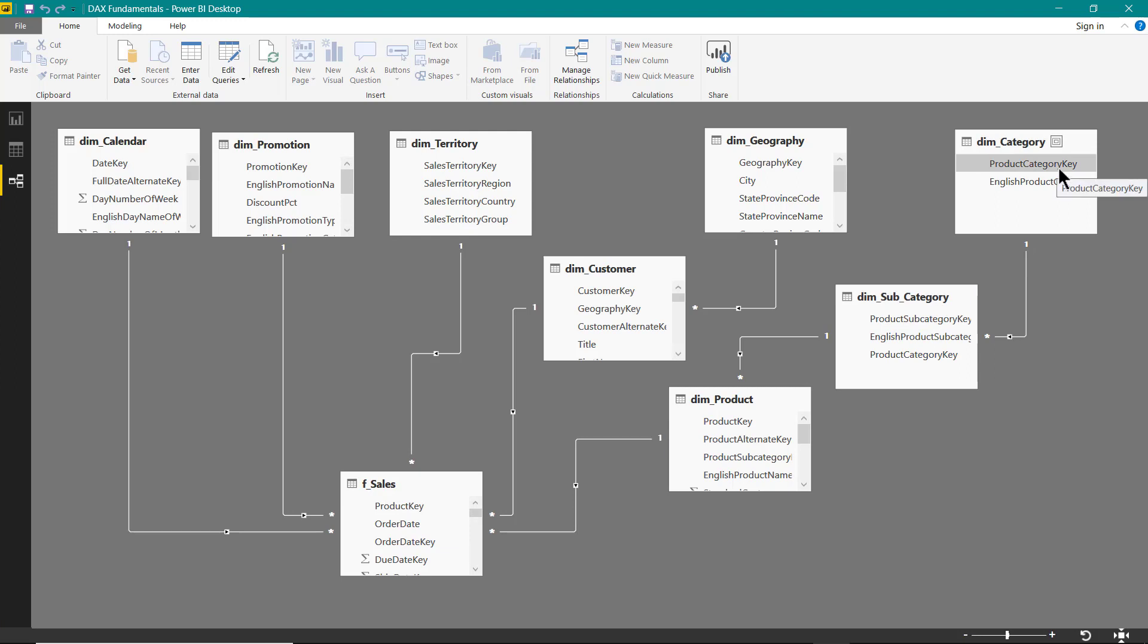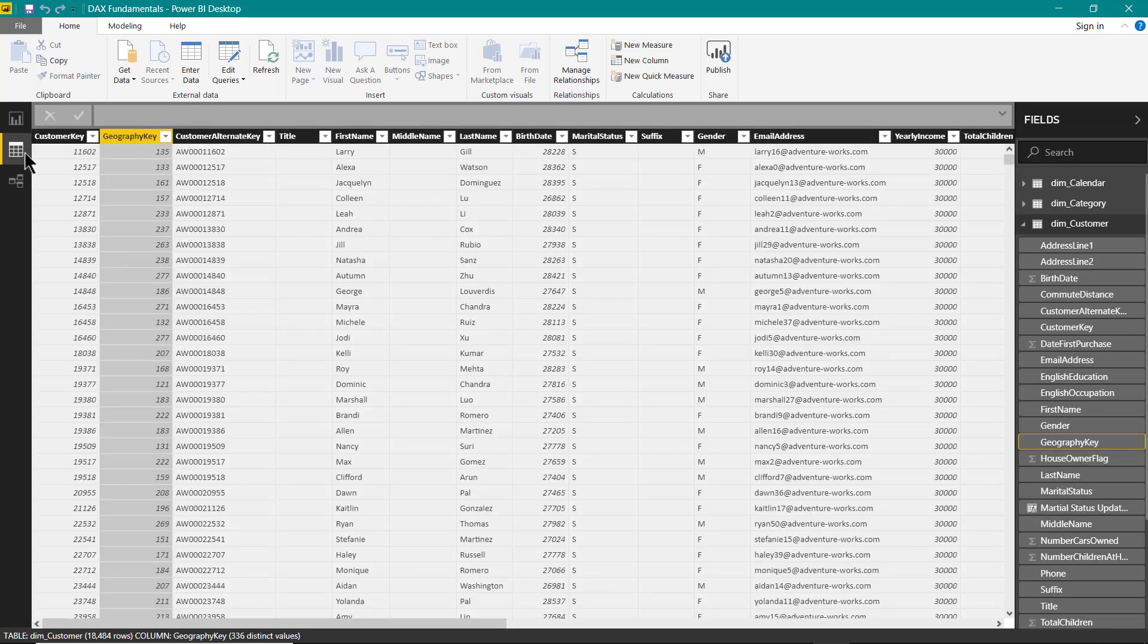Similarly, for categories, it will flow down Accessories from this table to subcategory, from subcategory to products, and only the products which are having a category of Accessories will get selected and it will then flow down to the sales table. All of the products which are having a category as Accessories and customer having city as Ballarat will get selected from this sales table. To take an example, if you see, we will see the geography table first of all.